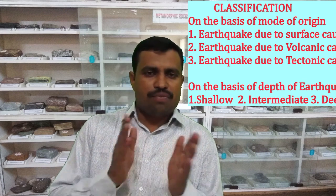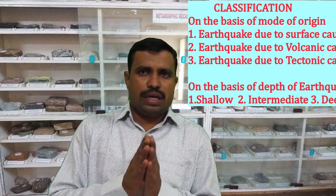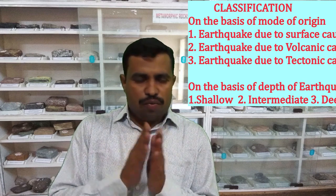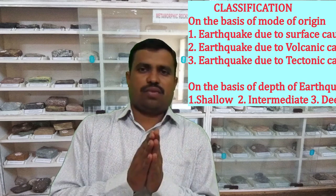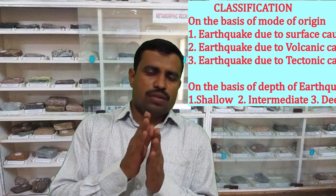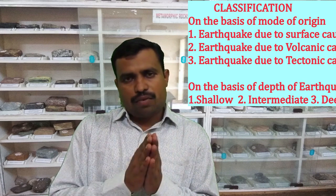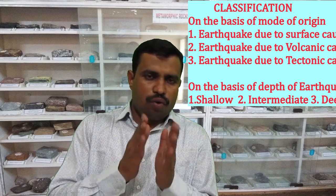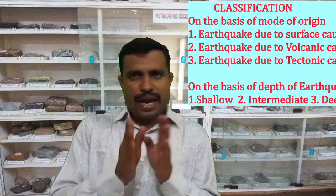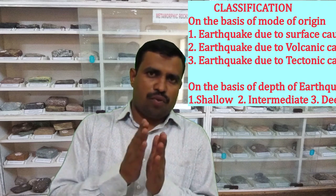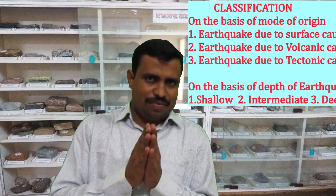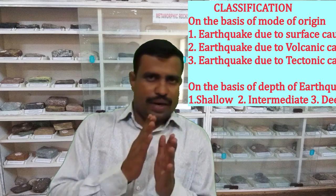The second classification of earthquakes is based on the depth of focus. There are three types: shallow focus earthquakes, having a focus up to 55 km depth; intermediate focus earthquakes; and deep focus earthquakes, with a focus between 300 to 650 km depth. When comparing these three, shallow focus earthquakes are more violent, but their affected area is limited compared to deep focus earthquakes.